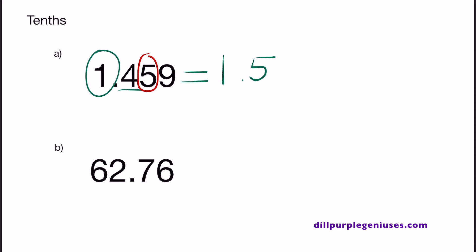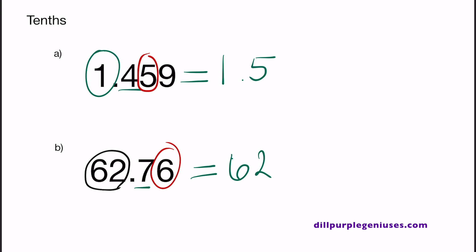In B, we have 62.76. 7 is in the tenths place and 6 is in the hundredths place. Let's start writing out the solution by writing down the numbers that are to the left of 7. So we should start off with 62, and don't forget the decimal point. 6 is to the right of 7, and 6 is greater than 5, so we need to round this decimal up. That means 7 will round up to 8, giving us 62.8.